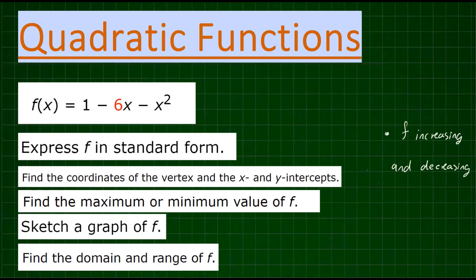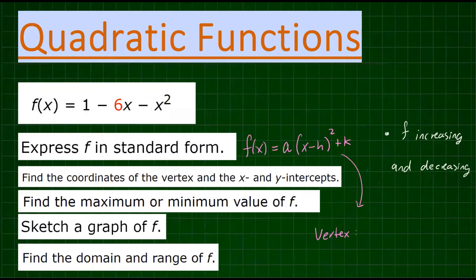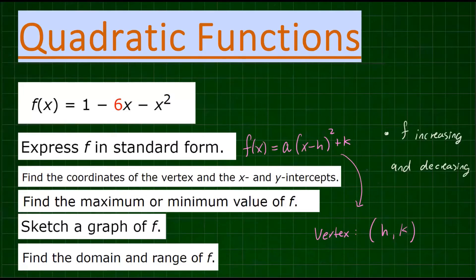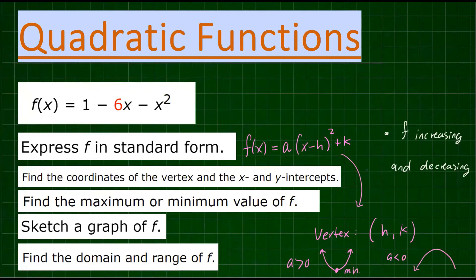What is the standard form? The standard form is f(x) = a times (x minus h) squared plus k. From here, the vertex of this function is going to be (h, k). If your a value is greater than zero, your parabola opens upward and the vertex is a minimum point. If your a is less than zero, your parabola faces down and the vertex is a maximum point.